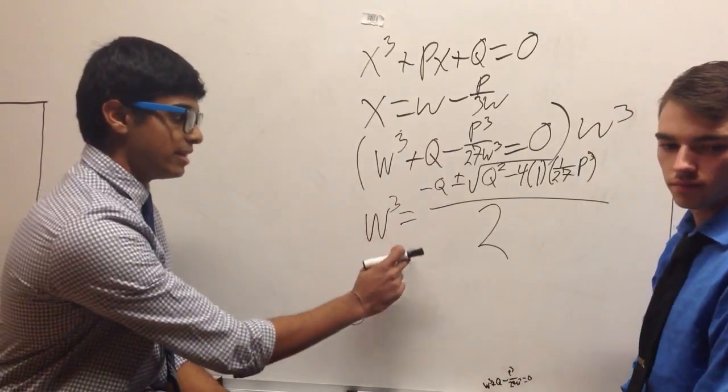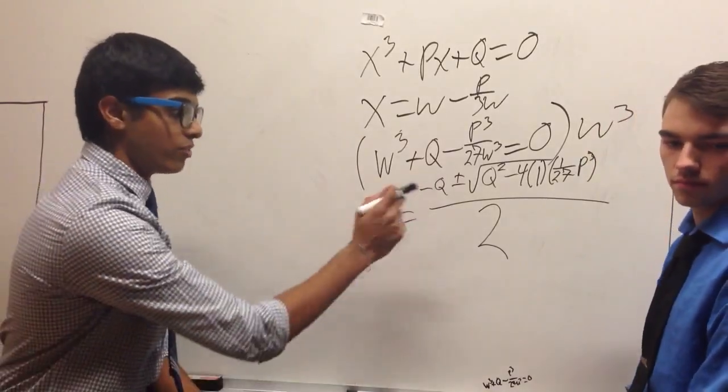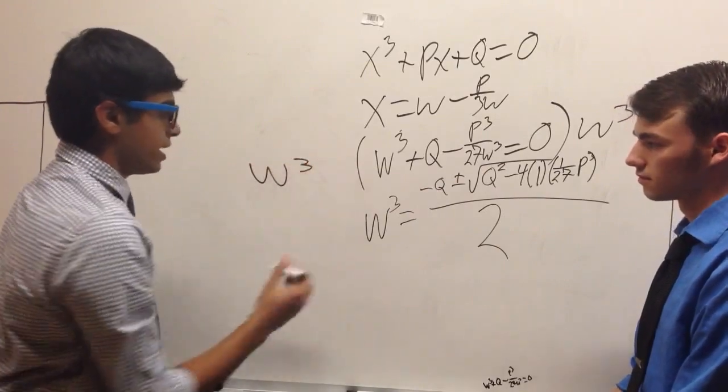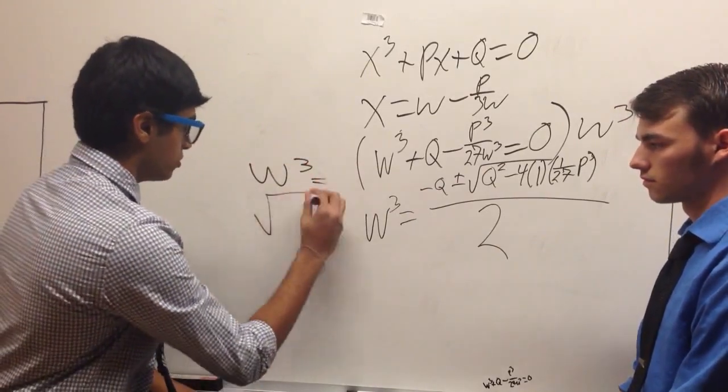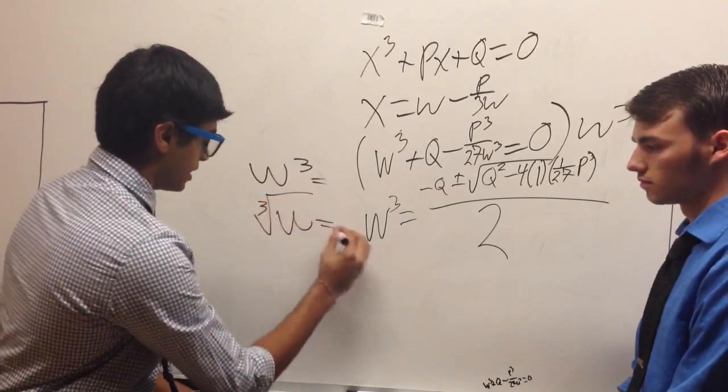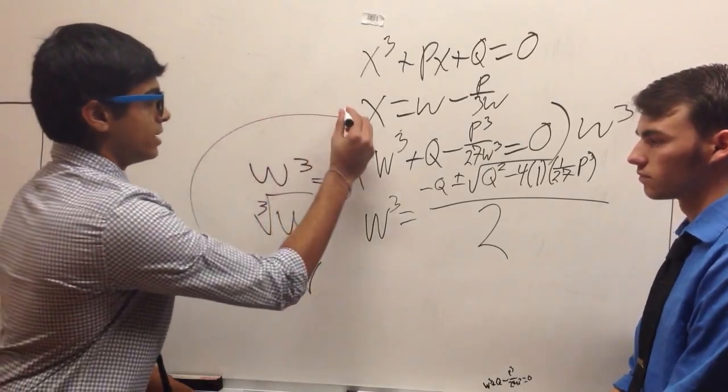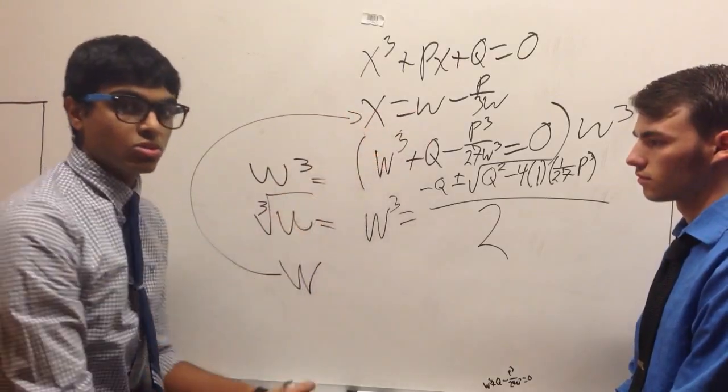Now, once you have this, you could plug in what you know for q and for p to find what w cubed equals. And then to solve for w, you'd simply take the cubed root of w to get what w is. And then once you have this, you would plug it back into here to find what x equals.